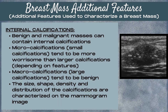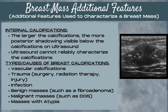The size, shape, density, and distribution of the calcifications are characterized on a mammogram image. The larger the calcifications, the more posterior shadowing that will be visible below the calcifications on the ultrasound image. Note that ultrasound cannot reliably characterize the calcifications — we can just get a sense of whether they're macro calcifications or micro calcifications.